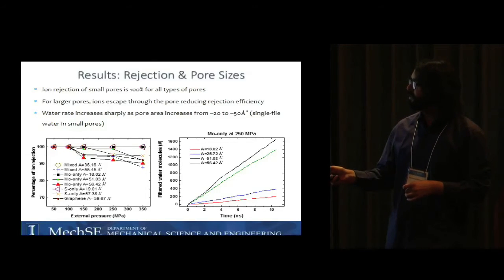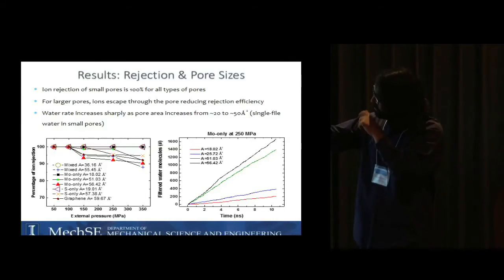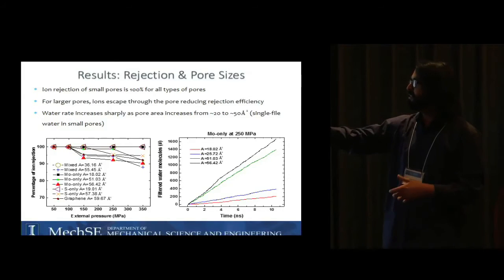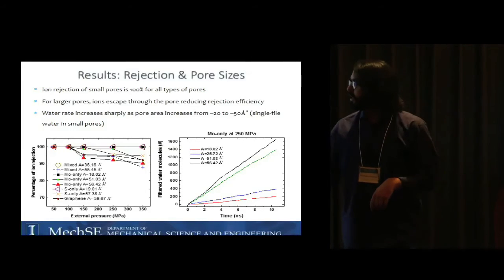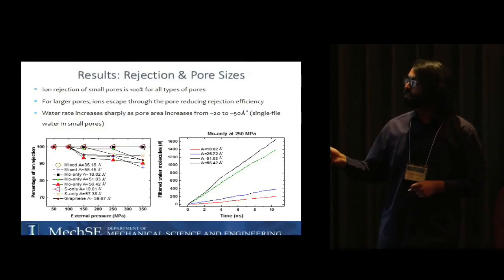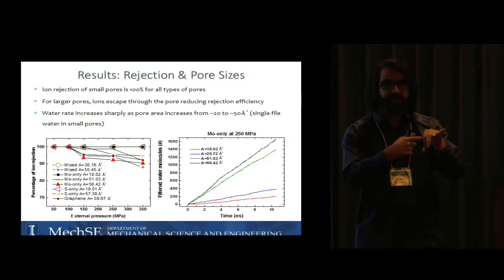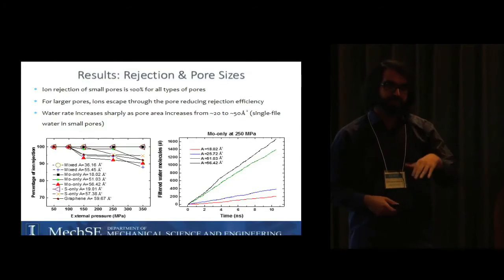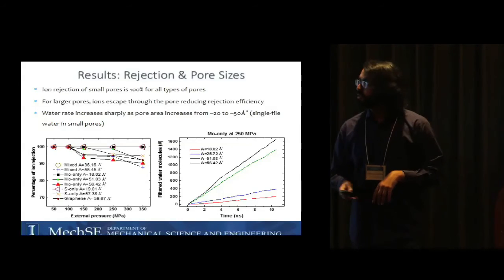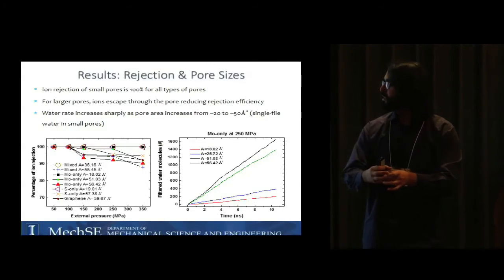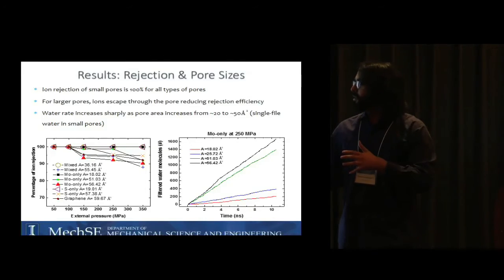You might say okay, let's just go with very tiny pores. But if you look at this plot where we have the filtered water molecules as a function of time, you can see that going from large nanopores of 50 angstrom squared to those small pores, there's a very significant drop in water permeation rate. That's because for very tiny pores the hydrogen bonding is very weak between water molecules and that reduces the permeation rate. We cannot just go with very tiny pores, and we cannot have very large nanopores because we will lose the rejection efficiency.